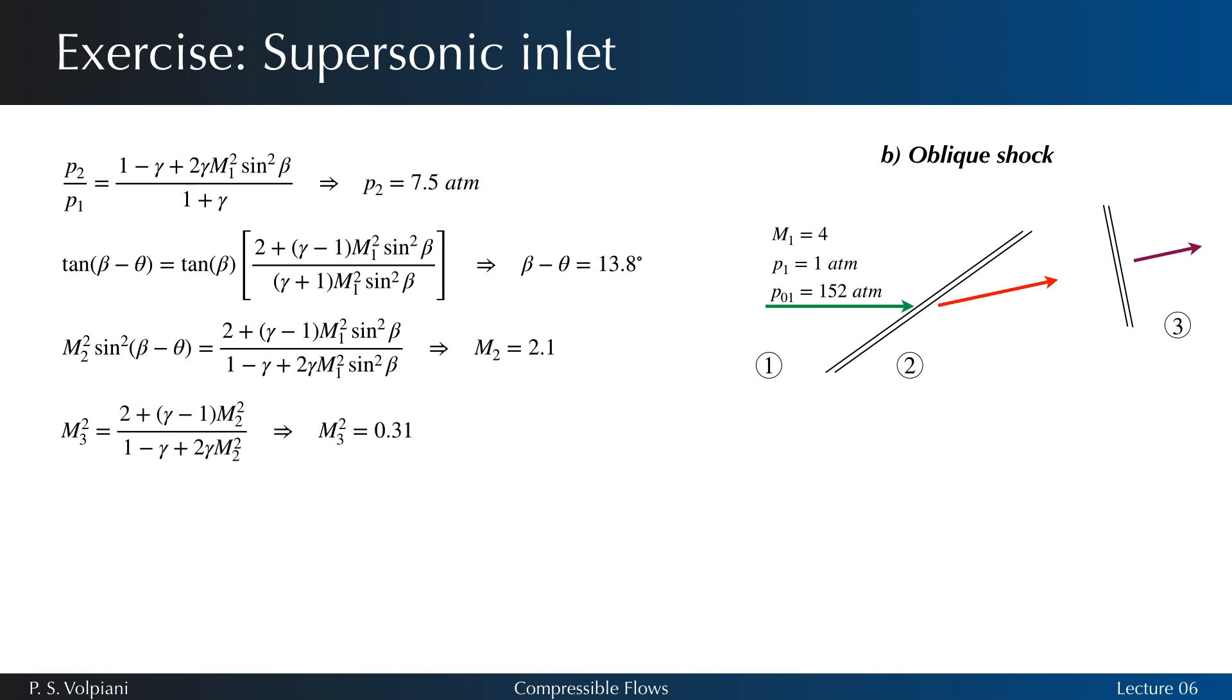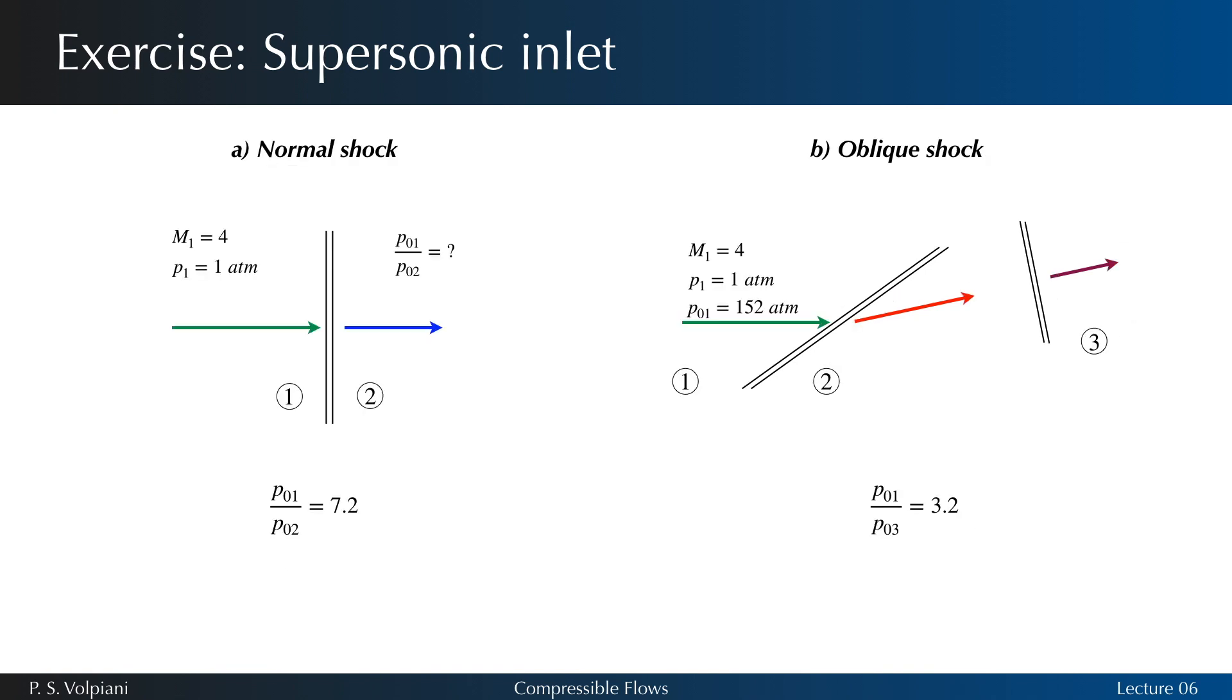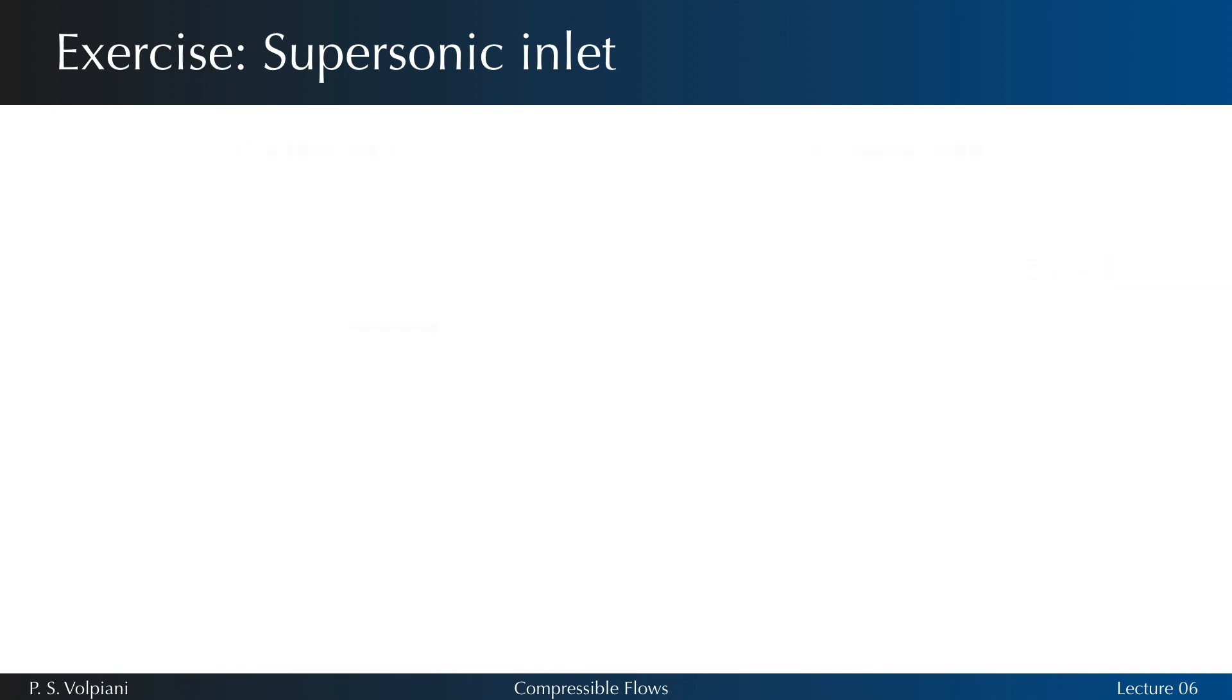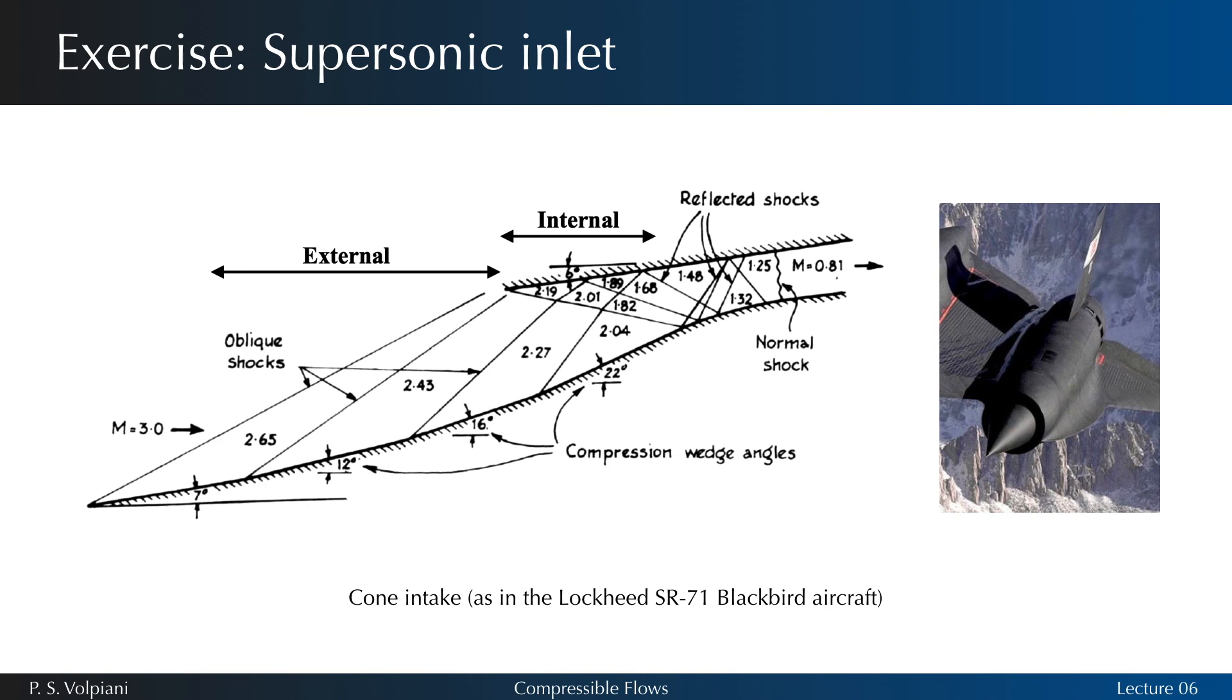We then go from state 2 to state 3 through a normal shock, using the same expressions than in the previous case. We see that the ratio between stagnation pressures P01 over P03 equals 3.2 in this case. We observe that the stagnation pressure loss is less important when we have a combination of oblique and normal shocks rather than a single normal shock alone, and this is taken into account in the design of air intakes of supersonic aircraft.